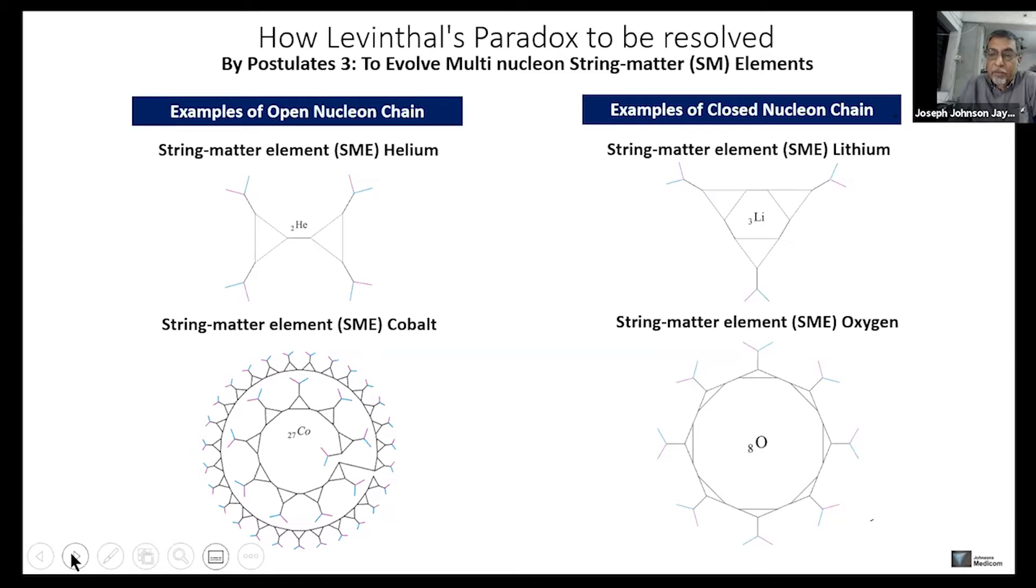Just like that, we can see that helium and cobalt have open chains that are not closed, whereas in lithium and oxygen, it's a closed chain. These two types of nuclear chain are defined in this paradigm.